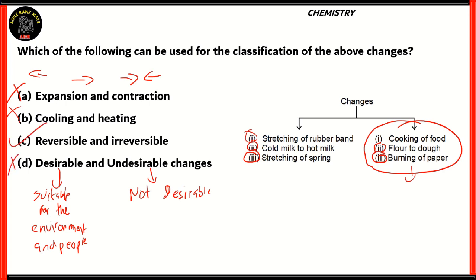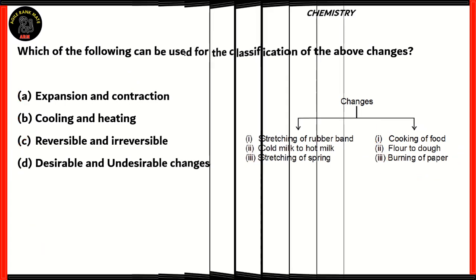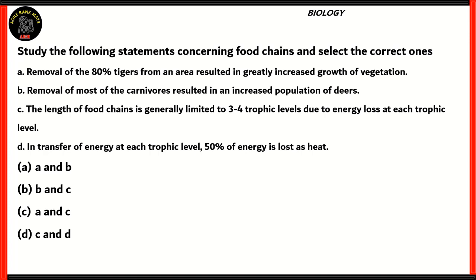The correct option is C, reversible and irreversible. Stretching of a rubber band is reversible — it can return to its shape. Cold milk to hot milk is reversible — the hot milk can cool back down. Stretching of a spring is reversible. Cooking of food is irreversible — you can't get the ingredients back. Flour to dough is irreversible. Burning of paper is irreversible — you can't recover the paper from the ashes. So option C is the correct answer.